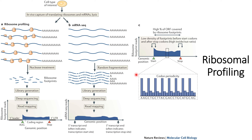Looking at panel C, we can understand the additional information gained from ribosomal profiling. A high percentage of the open reading frame — that is, the coding sequence — is covered with high read density, whereas non-coding sequences have very low read density. This is shown as low density of footprints before the start codon and high density after the start codon and before the stop codon.